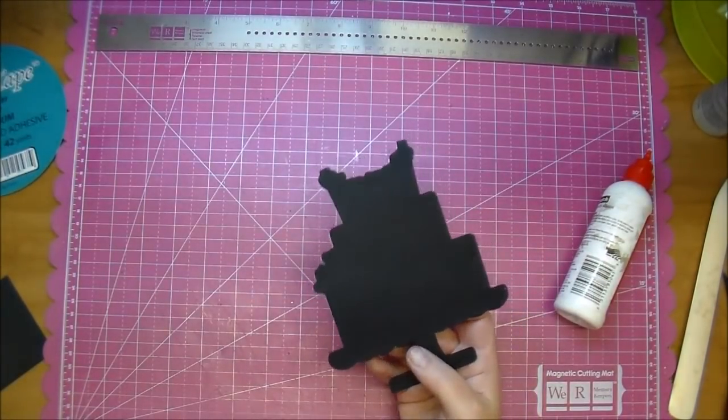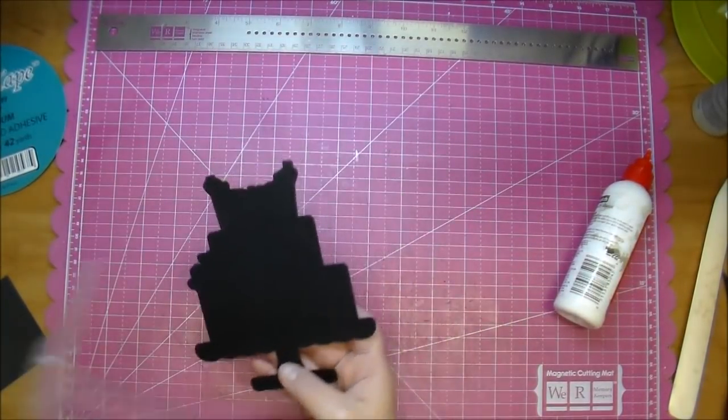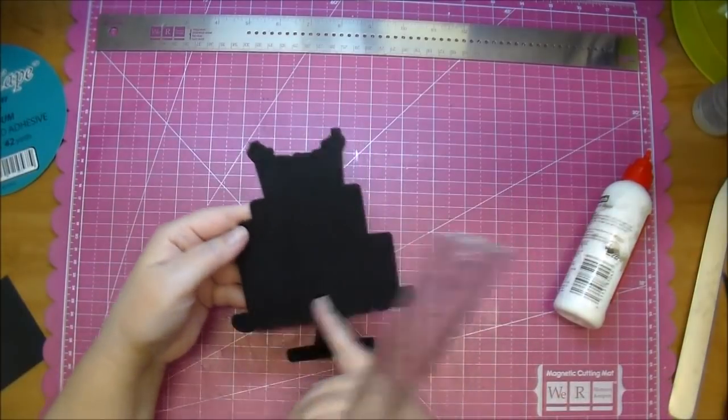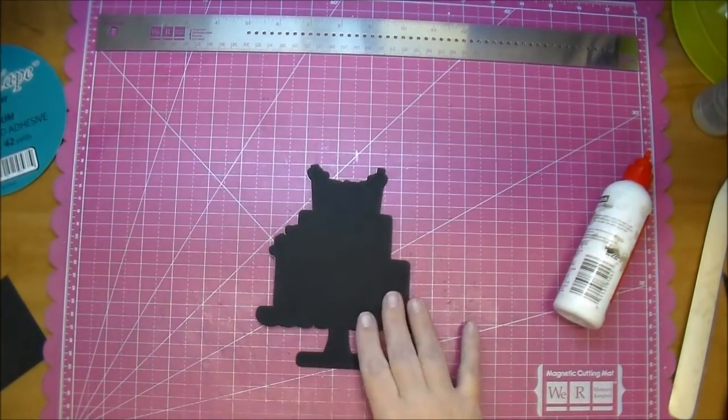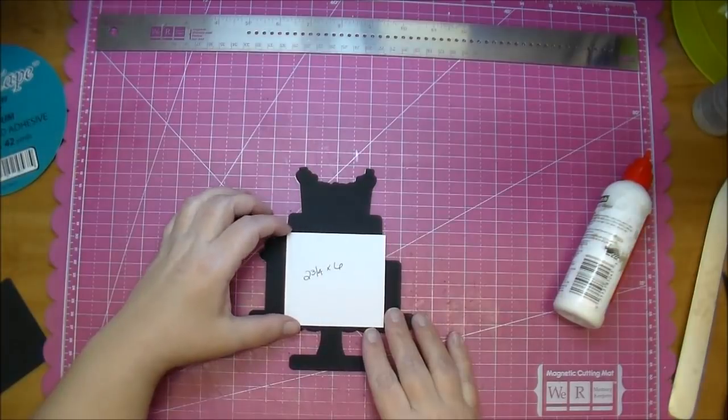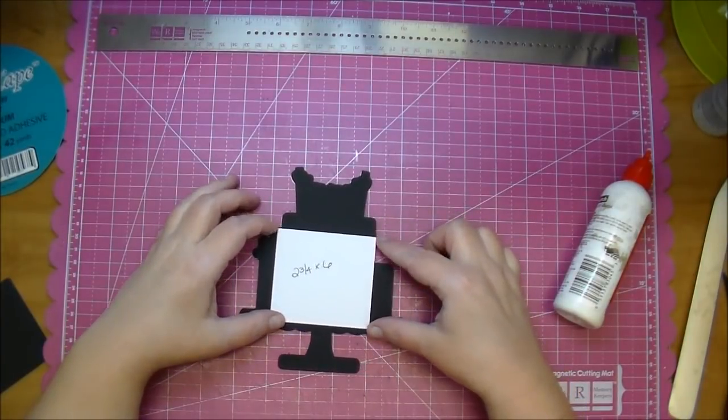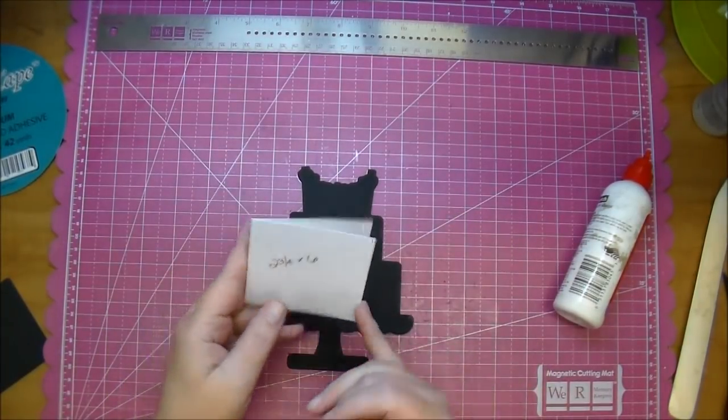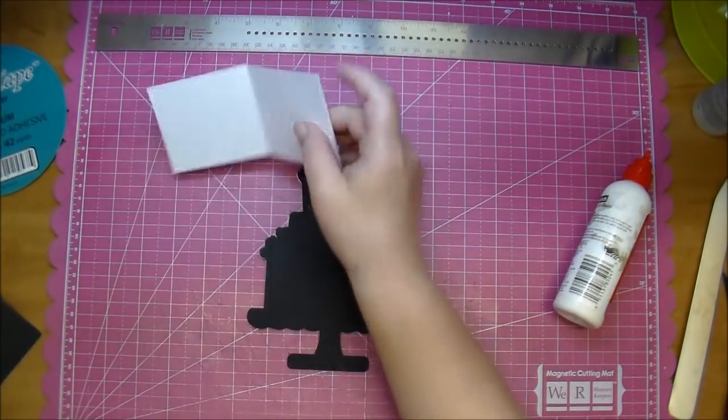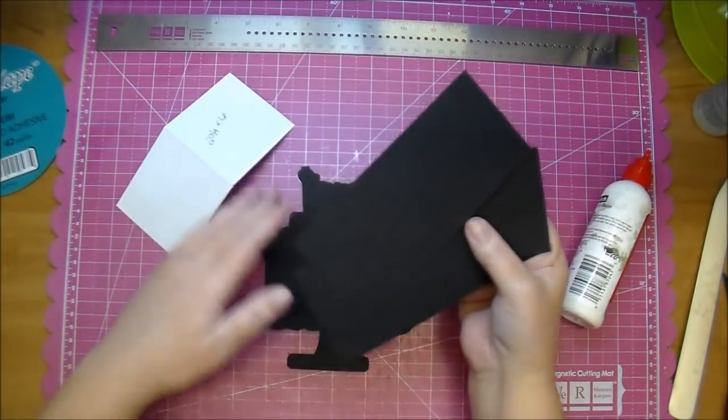So the next thing I did is measured it on the back, just like I did my other one, to see what size accordion that I could fit under it. And I determined that I could fit a two and three quarter tall by three wide, so I cut down several pieces to two and three quarters by six.